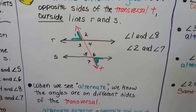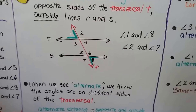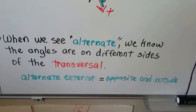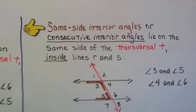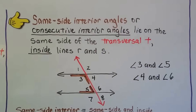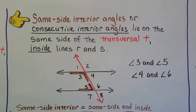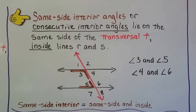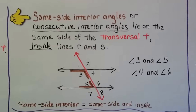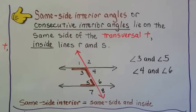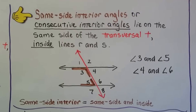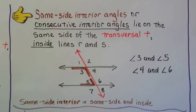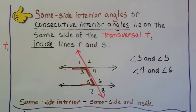When we see "alternate," we know the angles are on different sides of the transversal — so alternate exterior means opposite and outside. Same-side interior angles, also called consecutive interior angles, lie on the same side of transversal T inside lines R and S. Angles 3 and 5 are on the same side of the transversal and on the interior. Angles 4 and 6 are also on the same side of the transversal and inside lines R and S. So same-side interior means same side and inside.